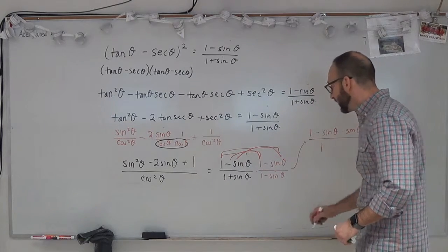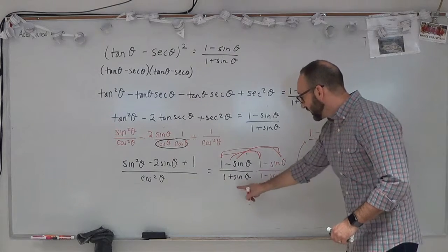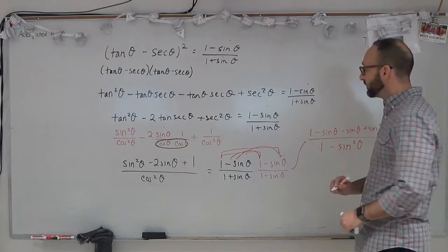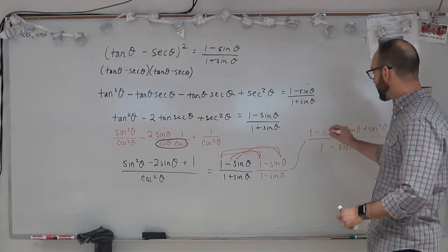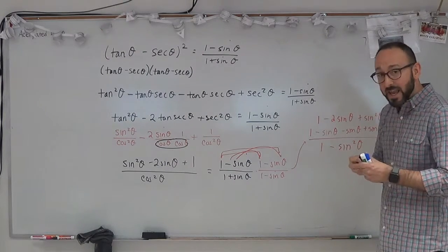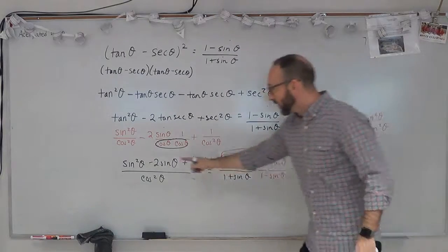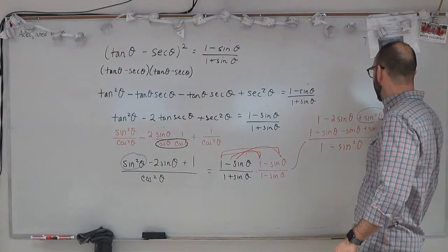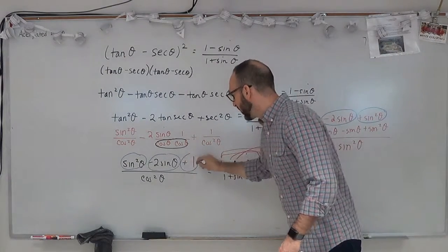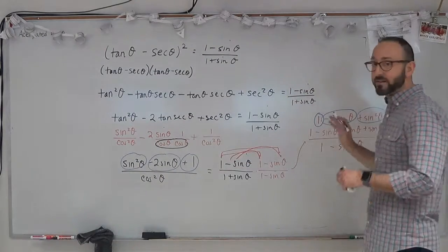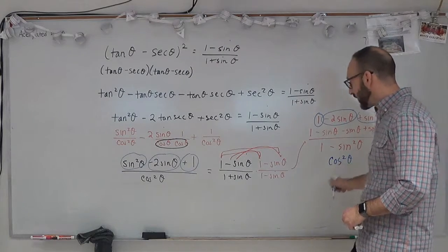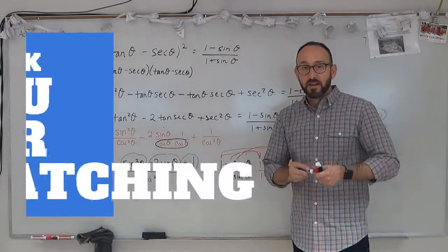The denominator: 1 times 1 is 1, 1 times negative sine theta is minus sine theta, sine theta times 1 is positive sine theta so those cancel, and sine theta times negative sine theta is negative sine squared theta. The numerator simplifies to 1 minus 2 sine theta plus sine squared theta — which exactly matches what we have on the left side. And 1 minus sine squared theta equals cosine squared theta, so the denominators match too. This identity is verified.